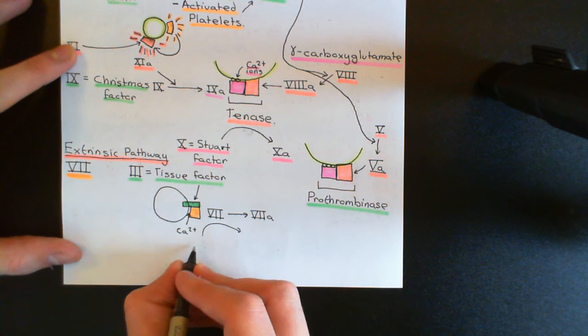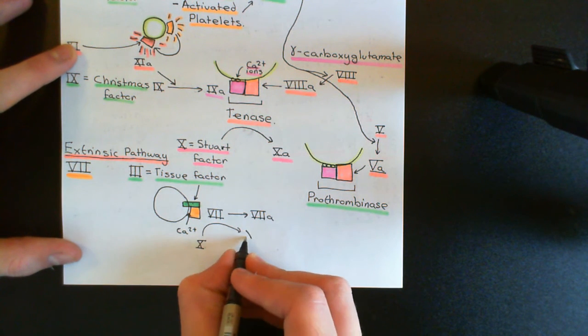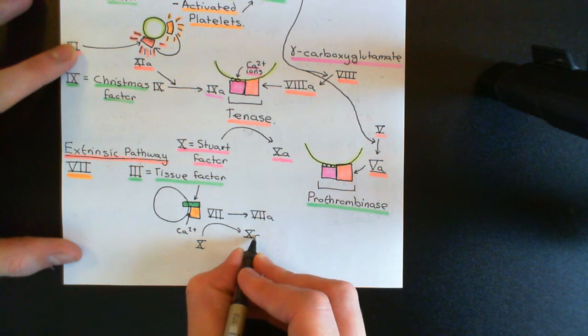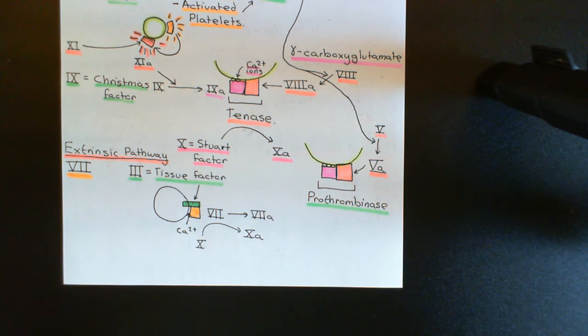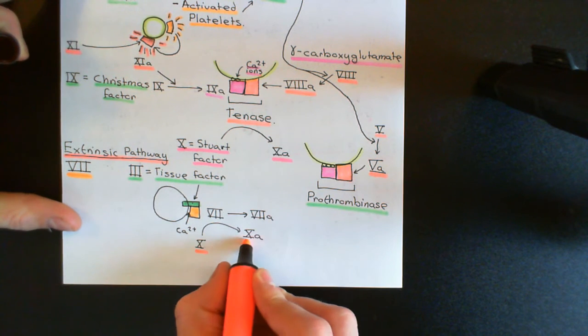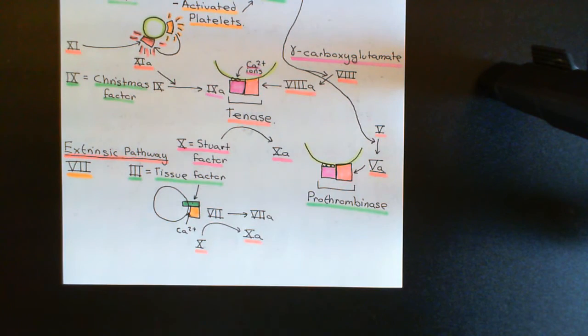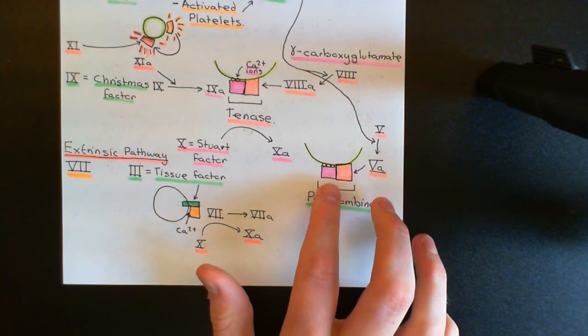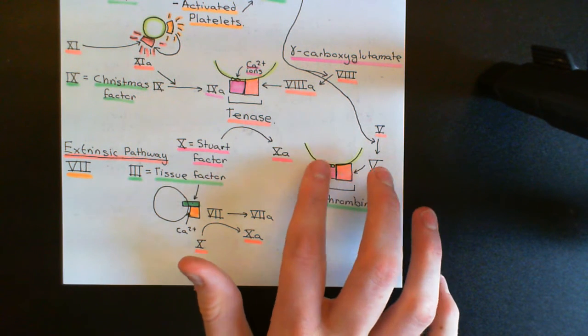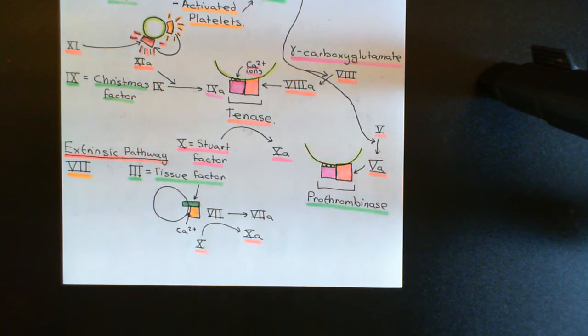The important bit here is that what it's going to do is take inactivated factor 10, or if you prefer, inactivated Stuart factor, and it's going to activate it to activated factor 10. And then the exact same thing is going to happen that happened after this step of the intrinsic pathway. Now factor 10a is going to combine factor 5a and calcium ions to form a complex on the surface of the activated platelets, which will function as a prothrombinase.